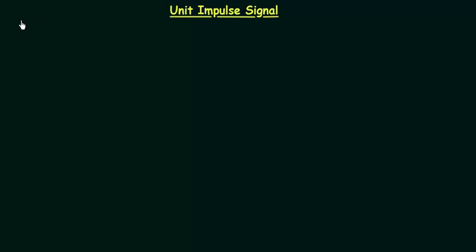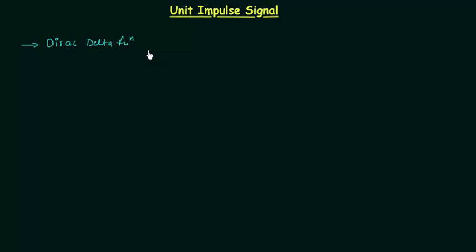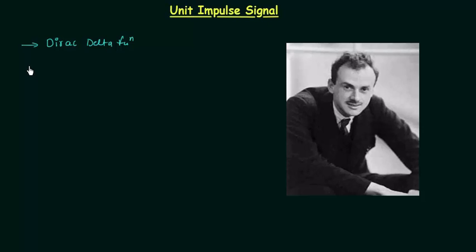In this presentation we will study the unit impulse signal. The unit impulse signal, or unit impulse function, is also known as the Dirac delta function, named after theoretical physicist Paul Dirac.